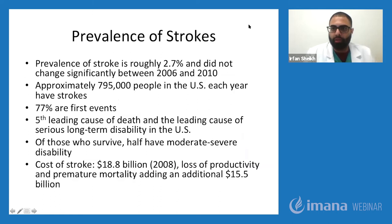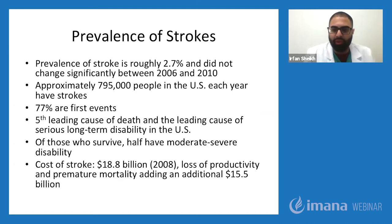How common is a stroke? Strokes are quite prevalent in the United States, about 2.7%. About 795,000 patients each year suffer from stroke, and 77% of those are actually first-time events. It's the fifth leading cause of death and the leading cause of serious long-term disability in the United States. Of those stroke survivors, about half have moderate to severe disability. Stroke is a very expensive disease — annually about $18.8 billion in 2008, with an additional $15.5 billion in lost productivity and premature mortality.